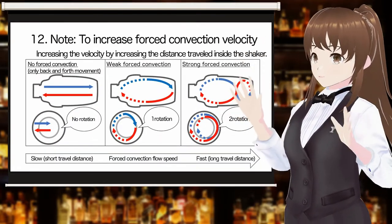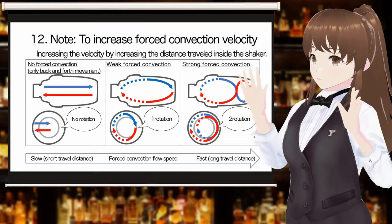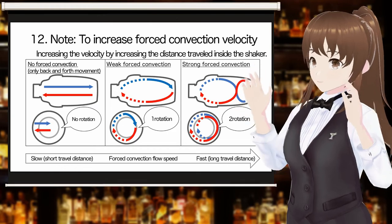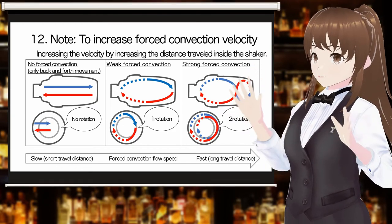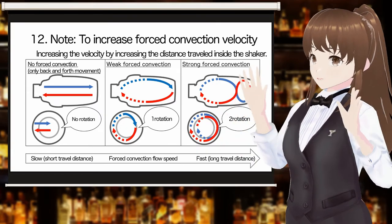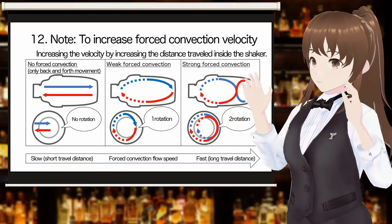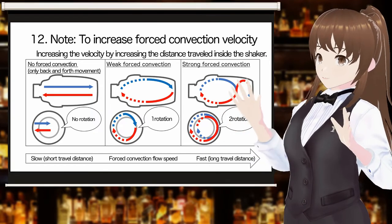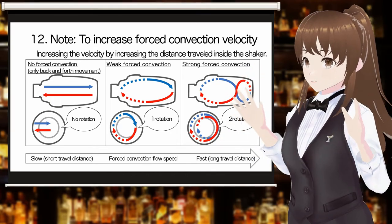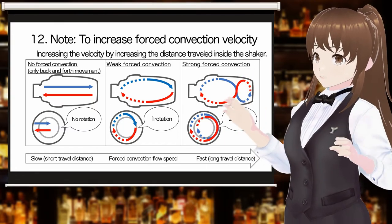It is difficult to have a concrete image of increasing the velocity of forced convection inside the shaker. A high flow velocity means that the flow distance is long in one second. There are two ways to increase the flow velocity inside a fixed-size shaker: one is to increase the speed at which the shaker is shaken, and the other is to increase the actual distance traveled inside the shaker. In other words, forced convection causes rotation along the inside of the shaker, and increasing that rotation leads to higher velocities.